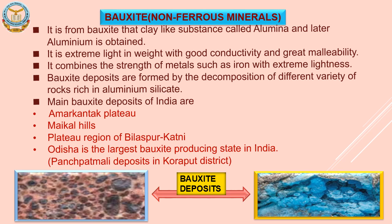Bauxite deposits are formed as a result of decomposition of surface rocks rich in aluminum silicate. Odisha alone accounts for 53% of the country's bauxite resources, followed by Andhra Pradesh, Gujarat, Jharkhand, Madhya Pradesh, Maharashtra and Chhattisgarh. In Madhya Pradesh, the Amarkantak Plateau is the main bauxite deposit, and in Chhattisgarh, the Maikal Hills and the Bilaspur-Katni plateau region is the main deposit. Panchpatmali Hills of Koraput district in Odisha is a major fully mechanized open-cast mine, in operation since November 1985.